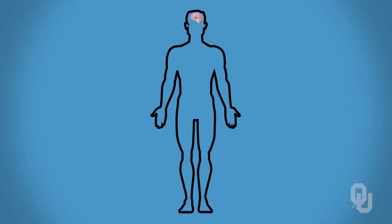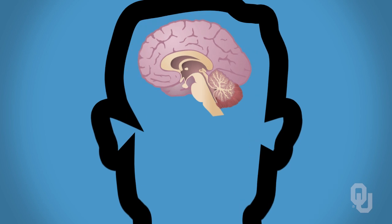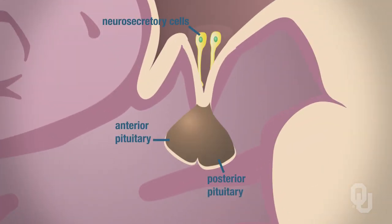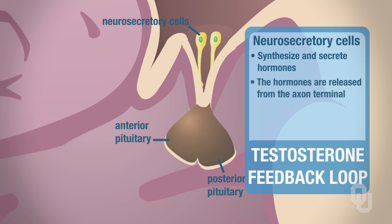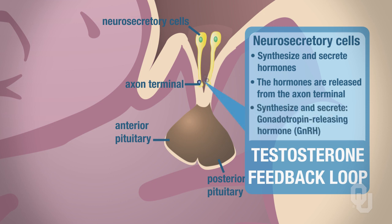We're going to begin with the hypothalamus. The hypothalamus is in the brain, near the center of the brain. We want to look at the cells within the hypothalamus called the neurosecretory cells. What these neurosecretory cells do is they synthesize and secrete hormones, released from the axon terminal of the neuron. In the testosterone feedback loop, we have to rely on these neurosecretory cells to synthesize and secrete a hormone called gonadotropin-releasing hormone, GnRH.